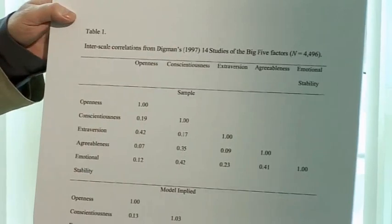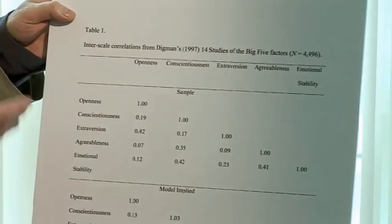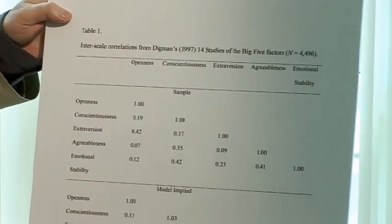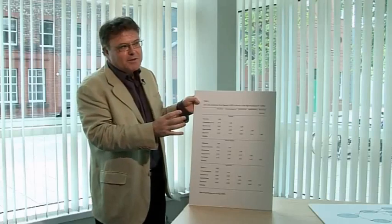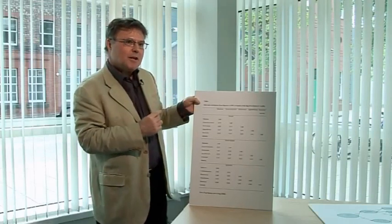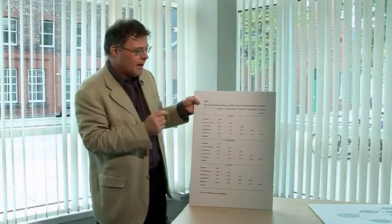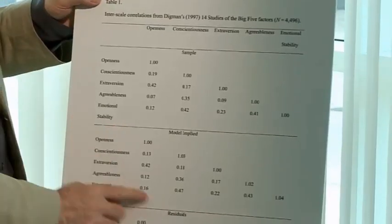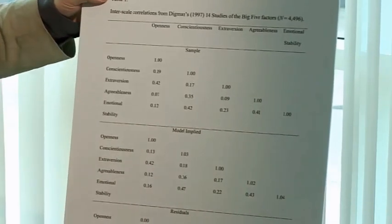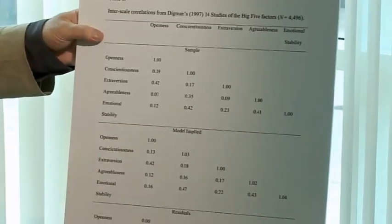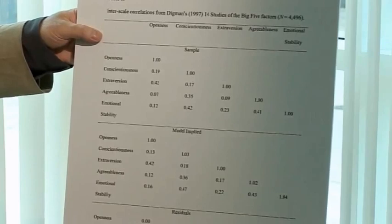Once we've got the factor model, we can do the whole thing in reverse. So we can take the factor loadings and work out what the correlations would be if those factor loadings were exactly correct. This is what we call the model-implied correlation matrix, which is down here. So we start off with the sample correlation matrix, we estimate the factor model, and then we do the reverse—we take the factor loadings and generate a correlation matrix.